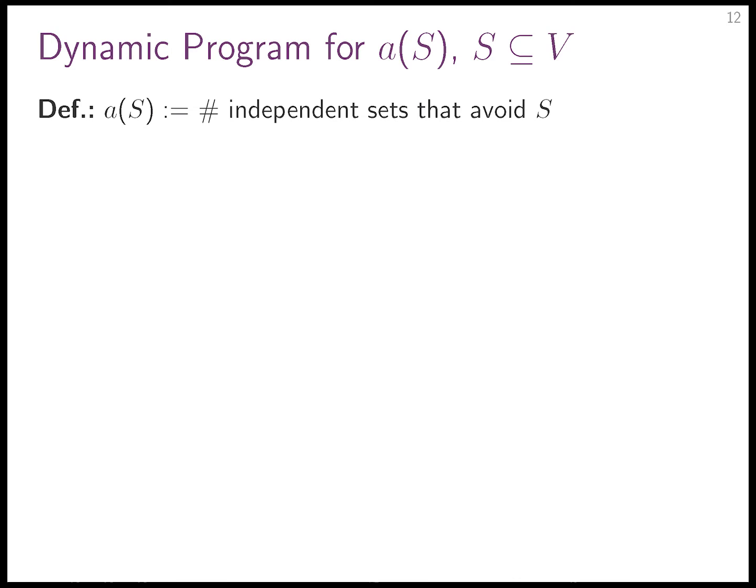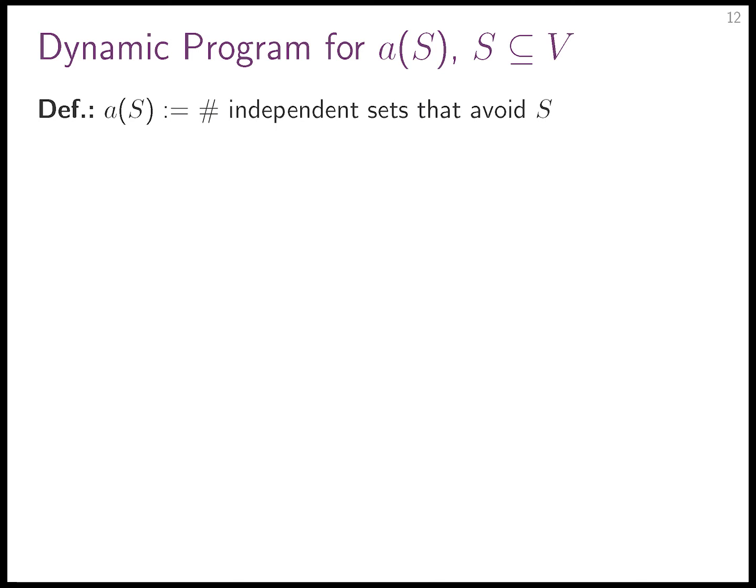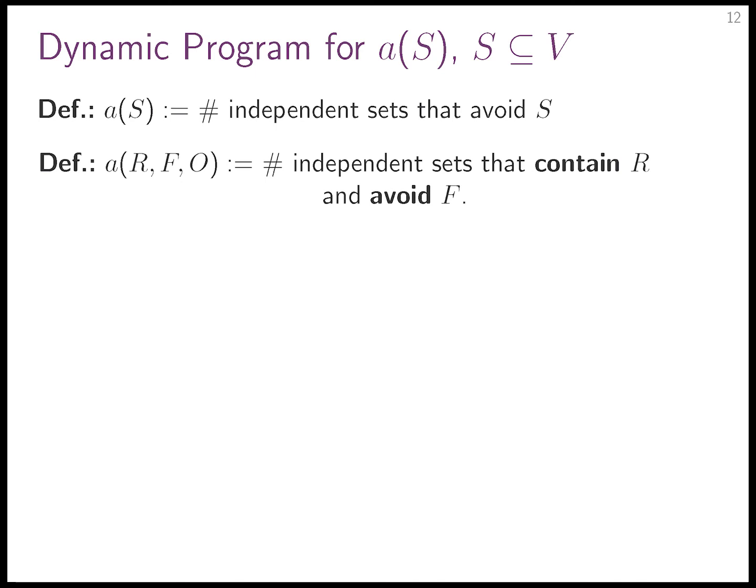Our universe is independent sets, properties are vertex membership. We define small a(R, F, O) as the number of independent sets that contain R and avoid F. The real a(S) equals a(∅, S, V\S) — S is forbidden, the rest are optional. What if O is empty? If R∪F equals everything, then a(R, F, ∅) is one if R is an independent set, zero otherwise — these are Iverson brackets.